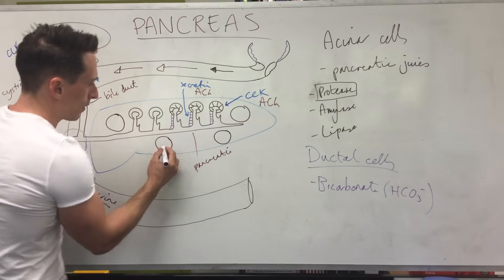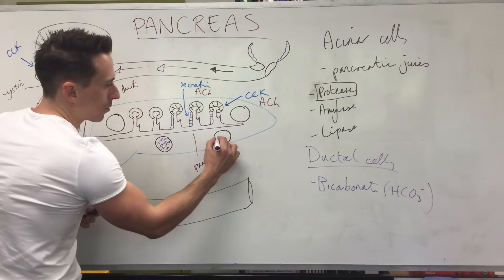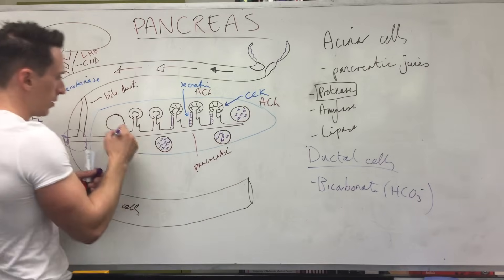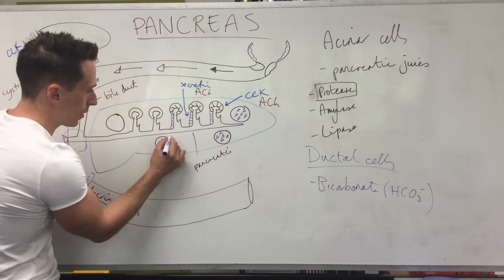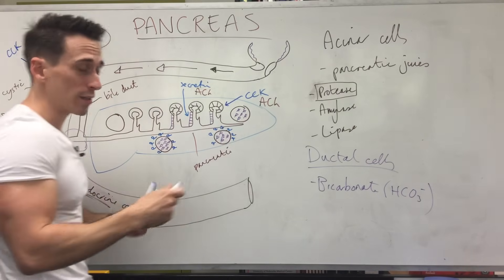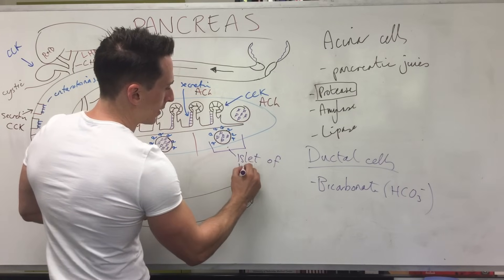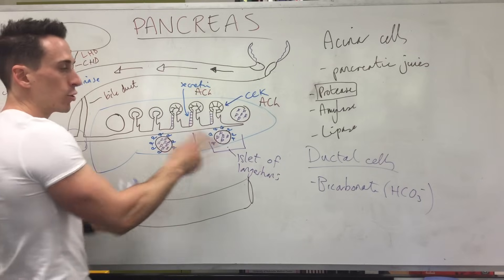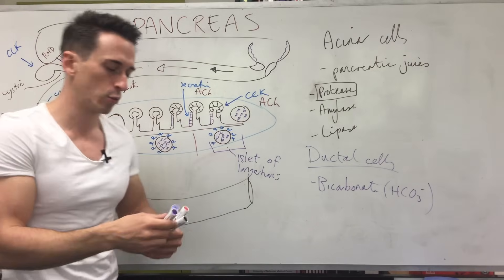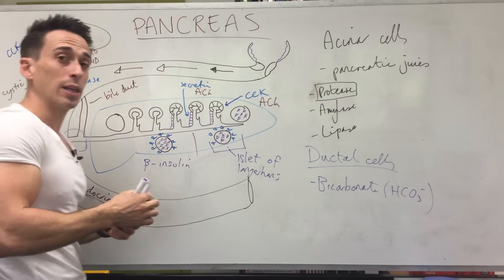There are groups of cells spotted around the pancreas, and these groups have a couple of different cell types. In the middle, more pronounced, are beta cells, and on the periphery are alpha cells. These groups of cells are called the islets of Langerhans. The islets of Langerhans contain the two predominant cell types that release insulin and glucagon. The beta cells release insulin, and the alpha cells release glucagon.